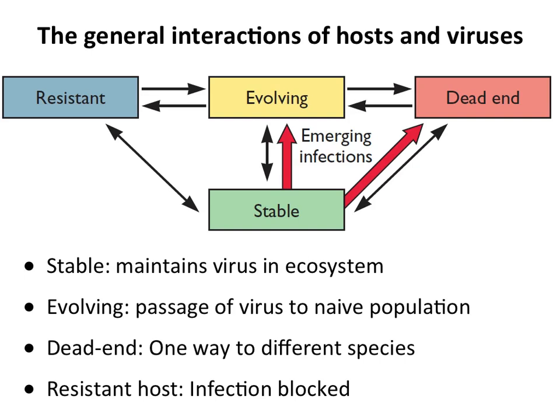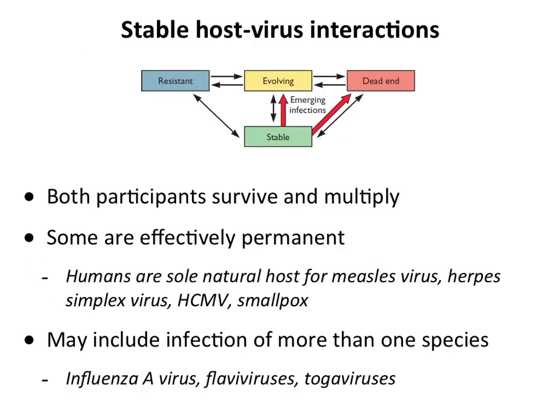In stable host-virus interactions, the virus and host are both present and multiplying. Some are permanent — measles, herpes simplex, cytomegalovirus, smallpox — all human infections with no apparent animal reservoir. Sometimes more than one species is involved: influenza goes from birds or pigs to people, flaviviruses interact with multiple hosts, and other arthropod-borne viruses do as well. These are stable interactions — a virus infecting a species, sometimes animals, sometimes people, going on for a long time.